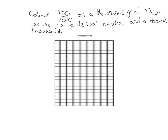The first thing I want us to do is color 750 out of a thousand. So there are a thousand different little squares in here, and we're going to cover 750 of them. I'm going to get my red highlighter out and start by coloring in a whole column. A whole column is worth 0.1, and if we count the little squares there are 100 in each column. So we need 750, which means I actually need seven columns. Let me do that.